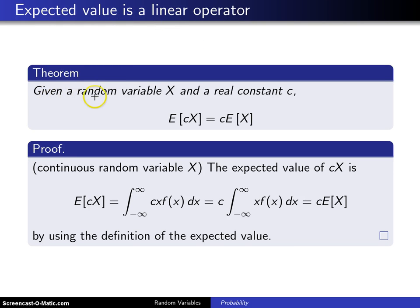The theorem states that given a random variable X, and notice we're not saying if X is discrete or continuous, this applies to both cases, and also a real constant c, then the expected value of cX is c times the expected value of X. Basically, what it's saying is that this constant c can be pulled out front of the expectation.